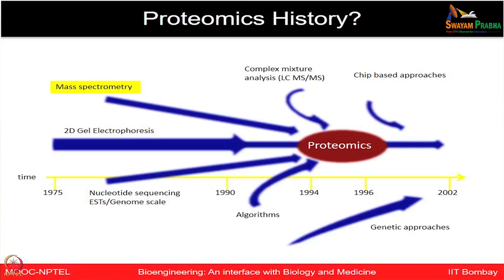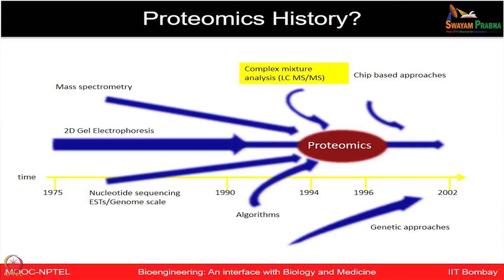Various types of nucleotide sequencing, ESTs, and genome-scale approaches were under development during the time frame of 1980s to 1990s. Over the period, advancements in mass spectrometry, especially the soft ionization techniques like ESI and MALDI, started giving much better understanding of proteins and a good capability of performing large-scale protein analysis. All these developments were happening in parallel along with the genome sequencing projects, which were giving rise to a lot of data. People started realizing the need for developing new algorithms, new databases, and new ways of searching for genes and proteins.